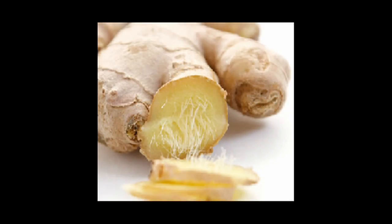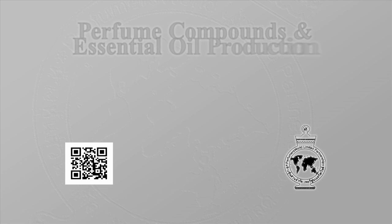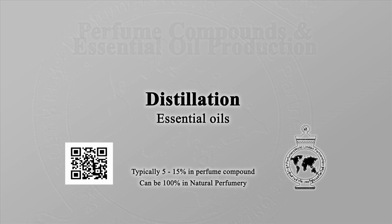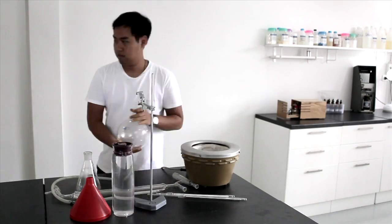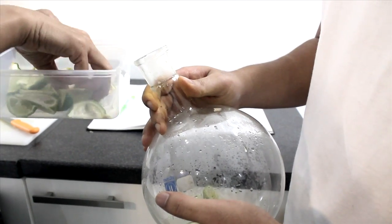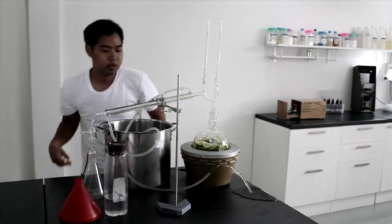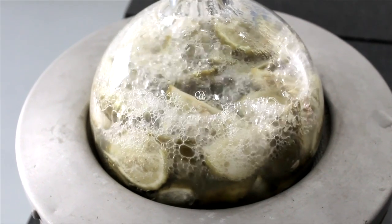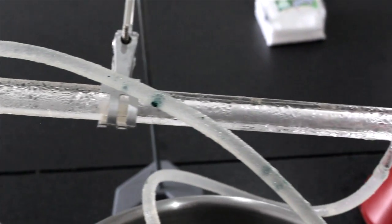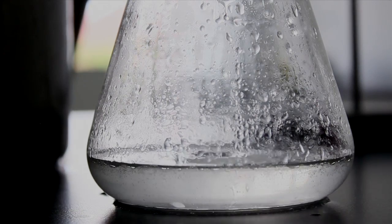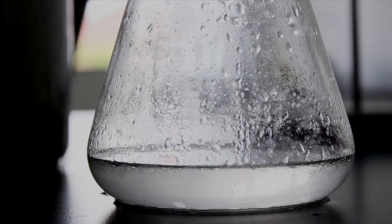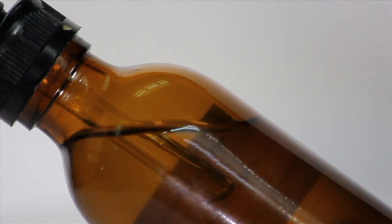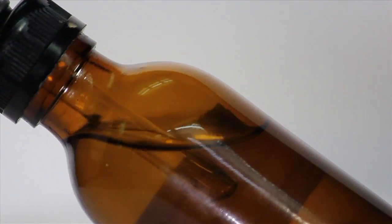Distillation is where the plant material is placed in a still and boiling water or steam ruptures the cells, releasing the volatile oil into the steam. The steam is then condensed and collected in a separator where the oil and water separate into levels.